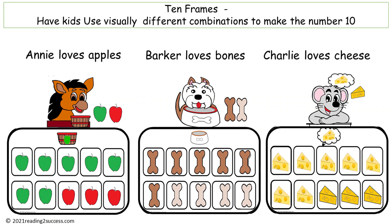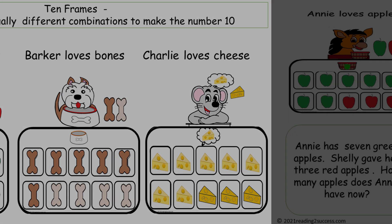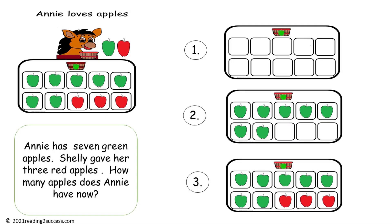Begin introducing kids to 10 frames with Annie, who loves apples; Barker, who loves bones; and Charlie, who loves cheese. Now let's look at the first 10 frame example. Annie has 7 green apples, and Shelly gave her 3 red apples. How many apples does Annie have now?